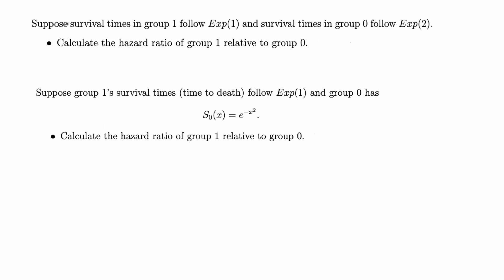In this video I'm going to do two survival analysis problems, both on calculating a hazard ratio. For each problem we have two groups, group 1 and group 0, and we have the survival times for these two groups. Each survival time follows a certain probability distribution, and we want to calculate a ratio of the hazard functions for each of the two groups.